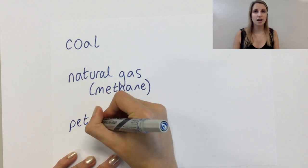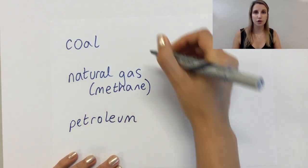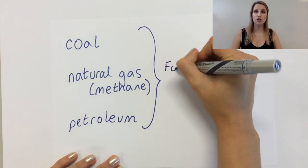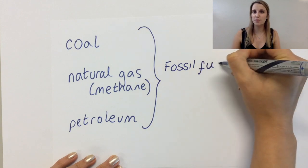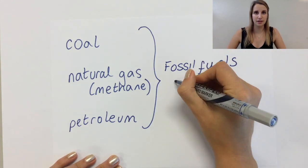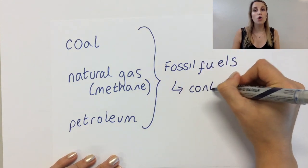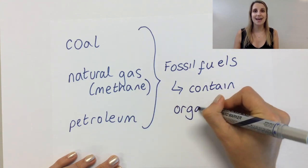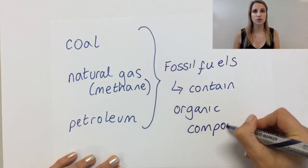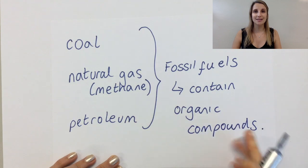All of these are examples of fossil fuels, which means that they're non-renewable energy resources that have been under the ground for millions and millions of years. Now all fossil fuels contain organic compounds, which means that all of them contain carbon.